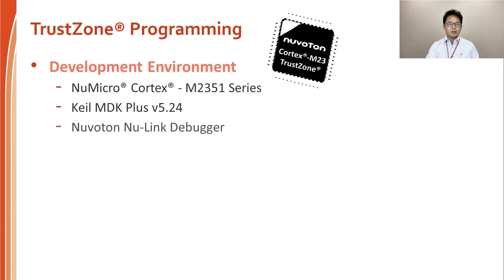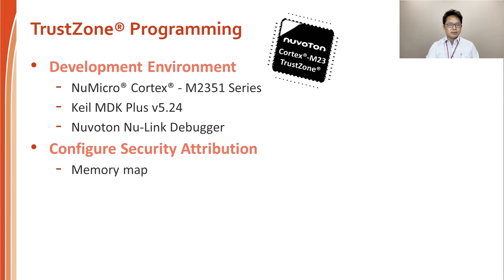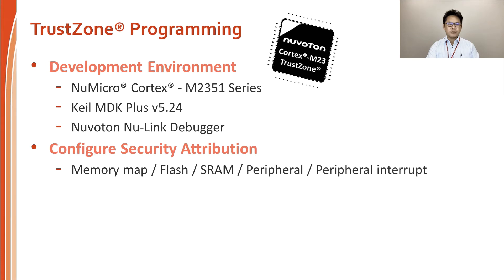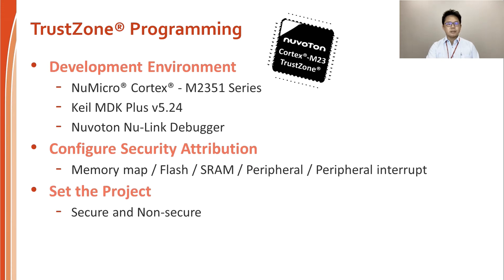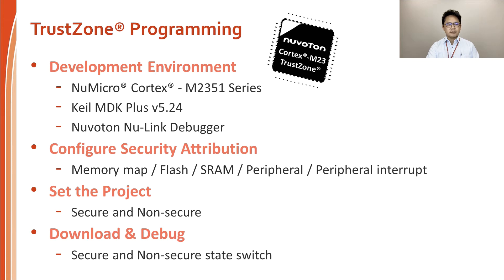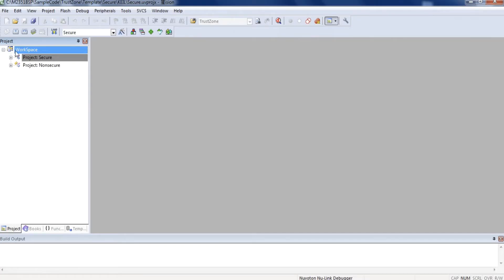The following will show TrustZone programming on M2351. The development environment is Keil MDK and the Nuvoton NuLink Debugger. First, this video will introduce how to configure security attribution including memory map, Flash, SRAM, peripherals, and peripheral interrupts. After setting security attribution, configure related secure and non-secure project settings. Compile and download the program; you can then observe the state switch between secure and non-secure through debug mode.